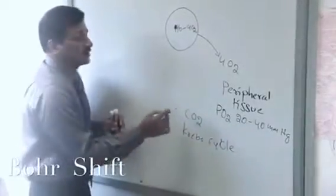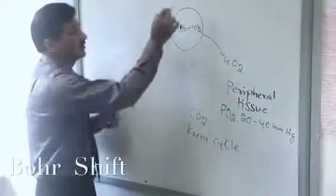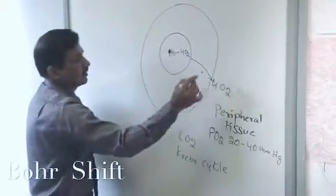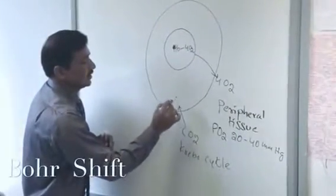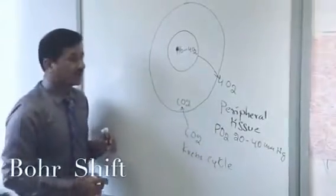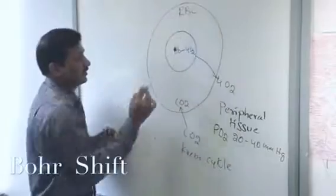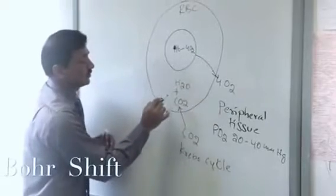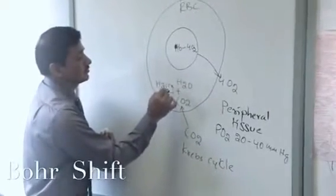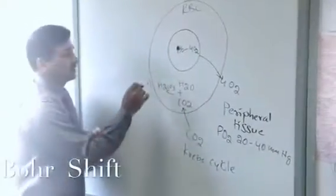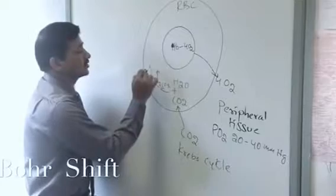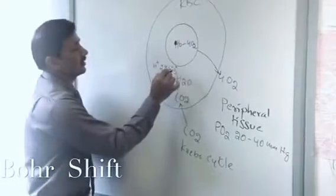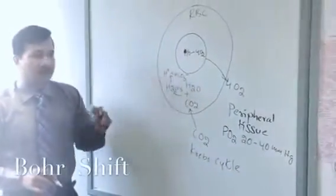This carbon dioxide is going to diffuse into the red blood cell. Within the cytoplasm of the red blood cell, carbon dioxide combines with water molecules to form H2CO3 — carbonic acid. This carbonic acid spontaneously dissociates into H+ and HCO3 minus — protons and bicarbonate.